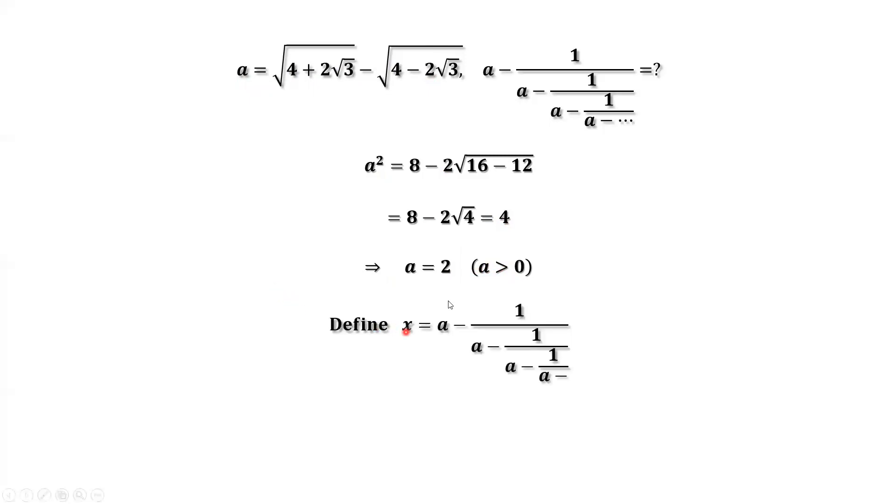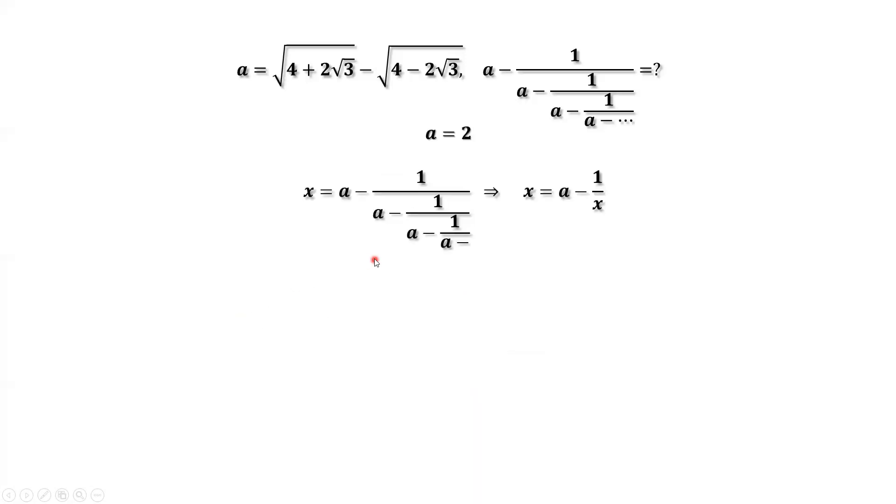We define this expression as a variable x. We want to find x. This implies x equals a minus 1 over x. We can see this denominator. This denominator, by definition, is the same as x.